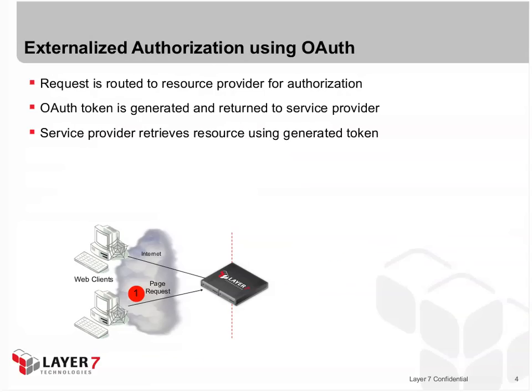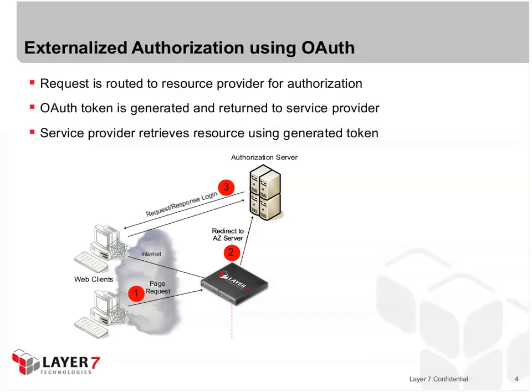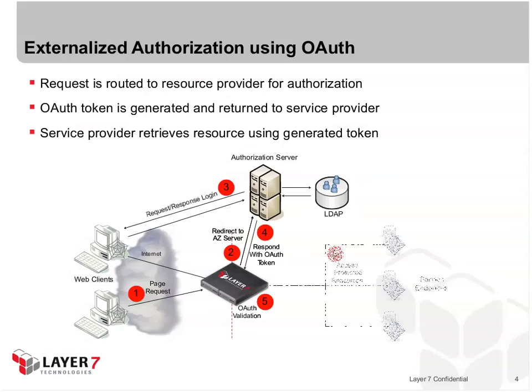Let's take a look at this graphically. First, you have a user sitting at a computer making a request for a page on a web application. That request is redirected to an authorization server that has some knowledge of the end user and has access to your resources. That initiates a request-response login process where you provide your credentials, and the authorization server validates those credentials and responds, redirecting to the original web application with an OAuth token. That web app passes the OAuth token along with its request for resources where it's validated, and if everything is validated, the protected resources are retrieved and sent back to the original end user.